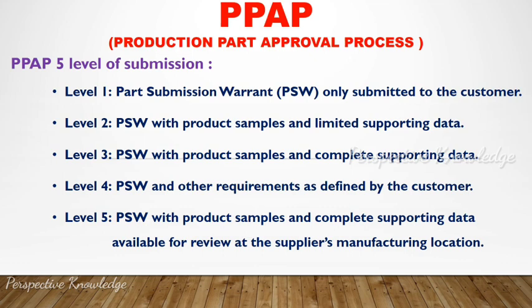Level 5 is PSW with product samples and complete supporting data, available for review at the supplier's manufacturing location. In Level 5, the customer's quality team reviews quality tests, manufacturing products, process flowcharts, and all process documentation. They verify requirements for quality, quantity, and any defects. All PS documentation is checked and corrected against the required output.